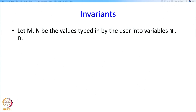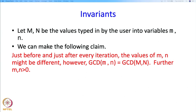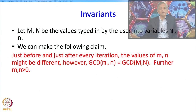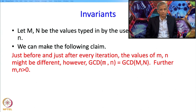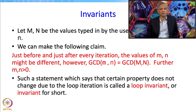So, invariants. Let us say that capital M and capital N are the values typed in by the user into the variables little m and little n. Then we would like to make the following claim: just before and just after every iteration, the values of the variables m and n might be different from iteration to iteration. However, GCD of what is in m and n is exactly the GCD of capital M and capital N — the GCD of the numbers that we wanted. This basically says that we are allowed to change those values m and n, but we are not losing any information. Such a claim — that a certain property does not change due to a loop iteration — is called a loop invariant, or sometimes just invariant.